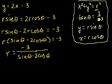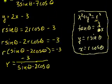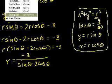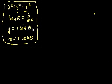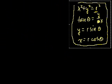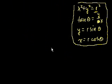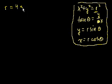Now they want us to do some problems converting the other way — from polar to Cartesian coordinates. Let's write our toolkit down; it's proved to be useful. They give us the polar function r equals 4 sine of theta, and we need to convert this into a function of x and y.